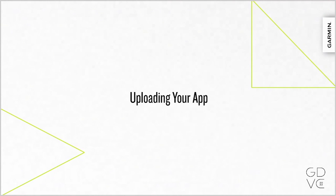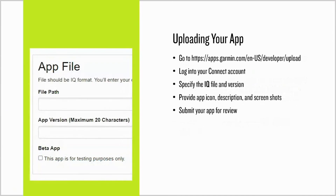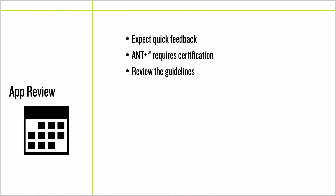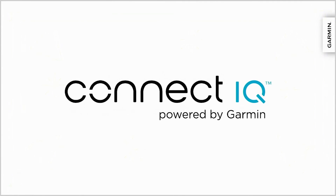Once you've finished your app development, you can upload your app to the ConnectIQ store. First, you need to export the app — using the Visual Studio Code extension, use the Monkey C Export Project command in the command palette to generate an IQ file. Then go to the app store and upload your IQ file. You can set several attributes such as the name, description, app icon, and screenshots. When you're finished, your app will be submitted for review. App review is usually complete in a matter of days, but not always — if your app uses ANT Plus, for example, it will need to be ANT Plus certified. Make sure to read the app review guidelines to avoid potential problems. You can learn more about submitting an app and review the guidelines on the developer site. And that's ConnectIQ — we're excited to see what you create. Thank you.